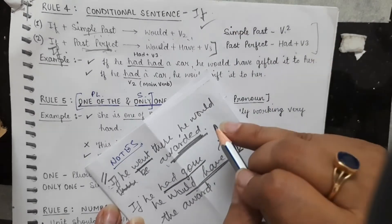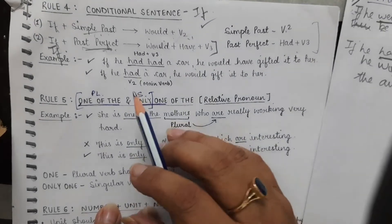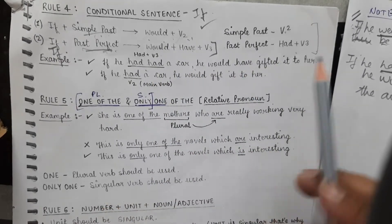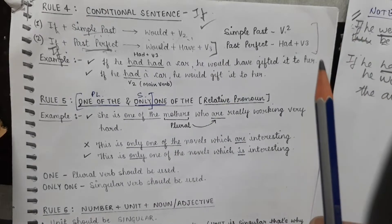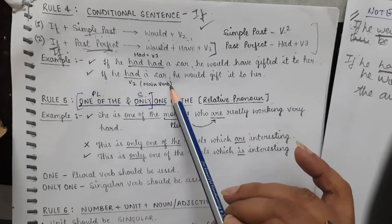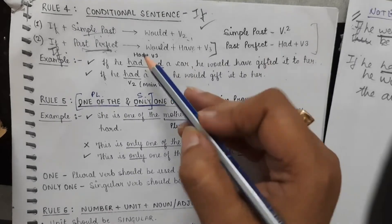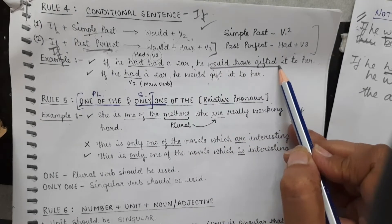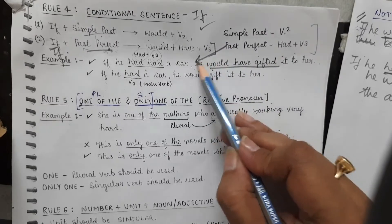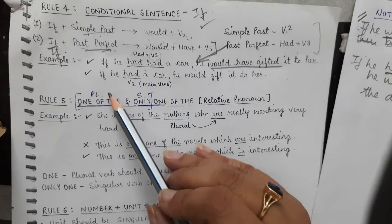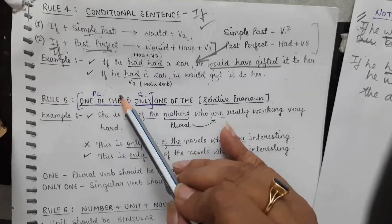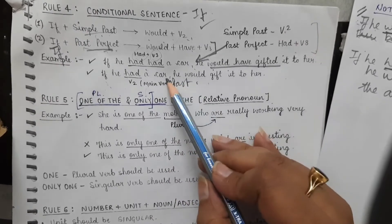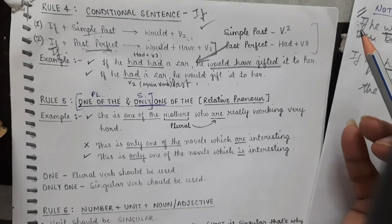These two rules are very clear from the examples. One more example: 'If he had had a car, he would have gifted it to her.' Here, with 'had' plus third form, we use 'would have' plus third form. But if the sentence is 'If he had a car' — simple past tense — then 'he would gift it to her.' Past perfect uses 'would have' plus third form; simple past uses 'would' plus base verb.